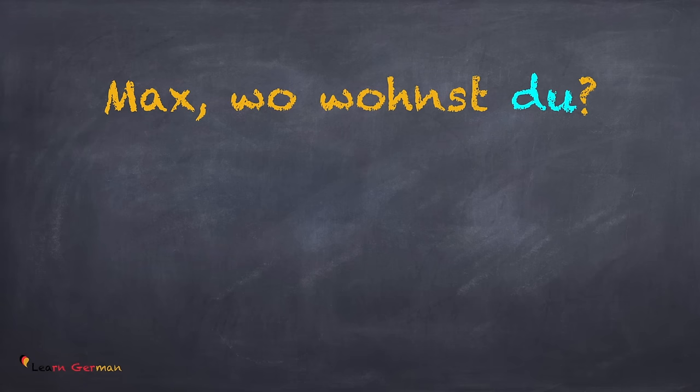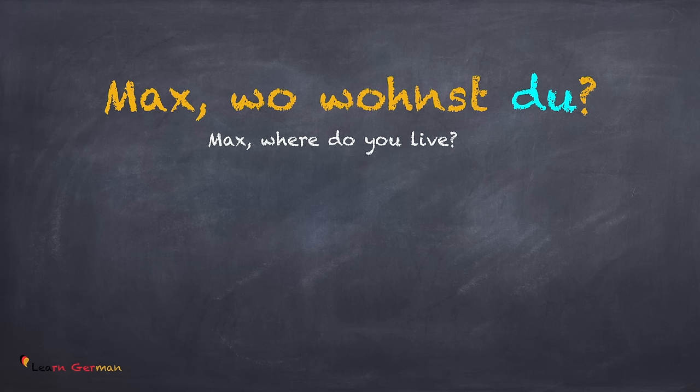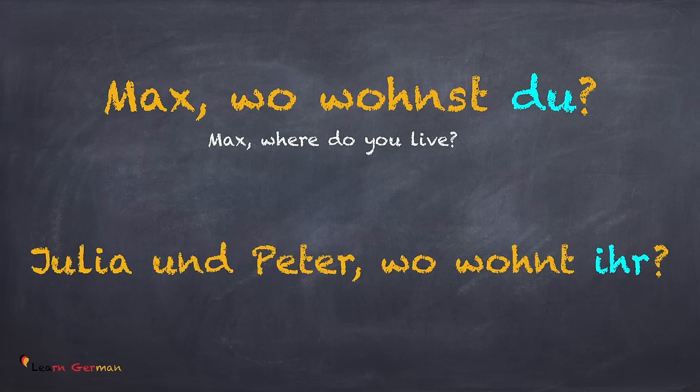Now let's see an example for each. Max, wo wohnst du? Don't forget, this is an informal situation. Hence, you would address the person with the first name. And while talking to more than one person, you would use ihr.